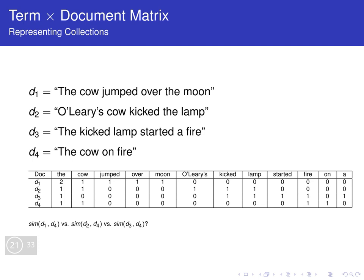Now we look at our document by term matrix here, and we see that if we do cosine similarity — it's an exercise for you to look at the previous video and see if you can compute the similarity between the different documents. If we do cosine similarity, at one point we're going to be multiplying the frequencies of each word. For example, for similarity between d1 and d4, we're going to be multiplying these frequencies of words. And that similarity is going to be big if the numbers you're multiplying are big.